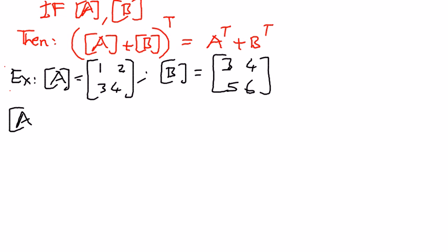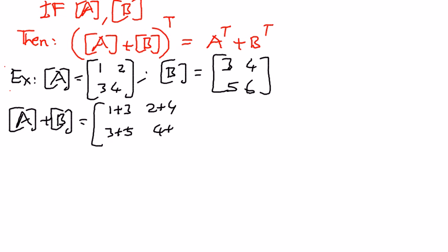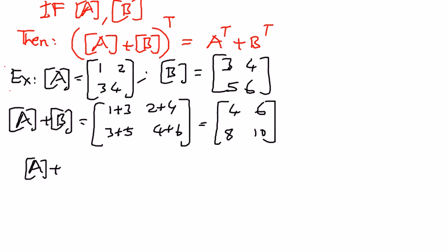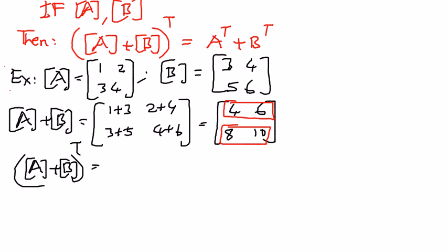Matrix A plus matrix B is computed by adding corresponding elements: 1 plus 3, 2 plus 4, 3 plus 5, and 4 plus 6, which gives 4, 6, 8, and 10. Transposing this result — writing rows as columns — gives us 4, 8, 6, 10.